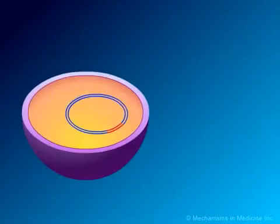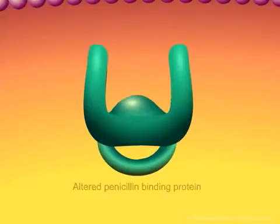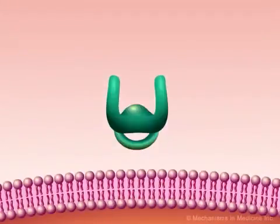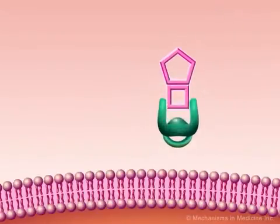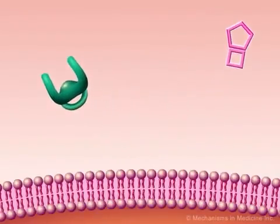If this remodeled DNA segment codes for cross-linking enzymes, i.e., penicillin-binding proteins, the result is the production of altered penicillin-binding proteins. These altered penicillin-binding proteins can still cross-link the peptidoglycan layers of the cell wall, but have a reduced affinity for beta-lactam antibiotics, thus rendering the bacterium resistant to the effects of penicillin and other beta-lactam agents.